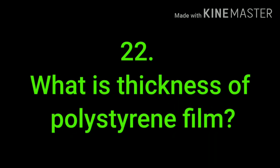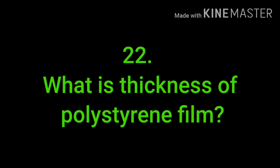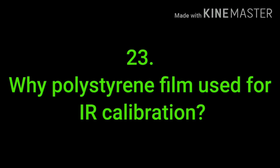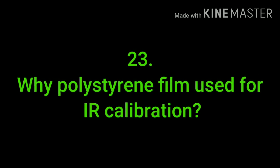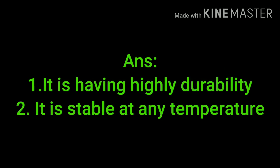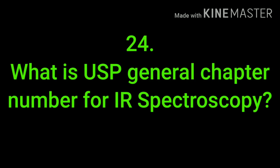What is the thickness of a polystyrene film? The thickness is 0.38 mm. Why is polystyrene film used for calibration? Most people do not know this answer. It is because polystyrene has high durability and is stable at any temperature. Due to these properties, polystyrene film is used as the calibration standard.